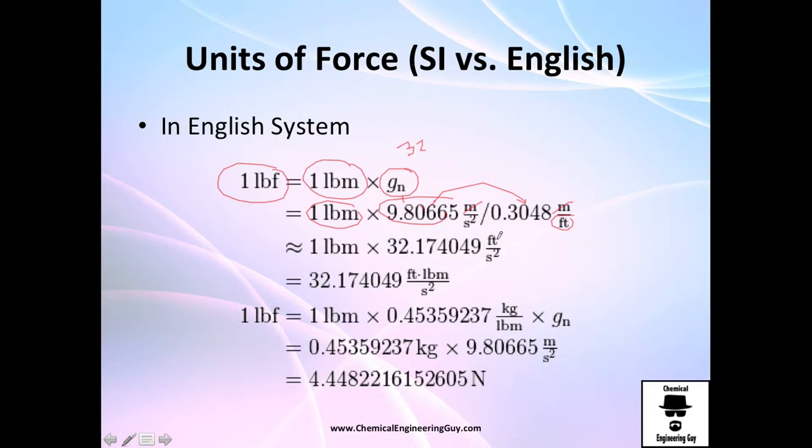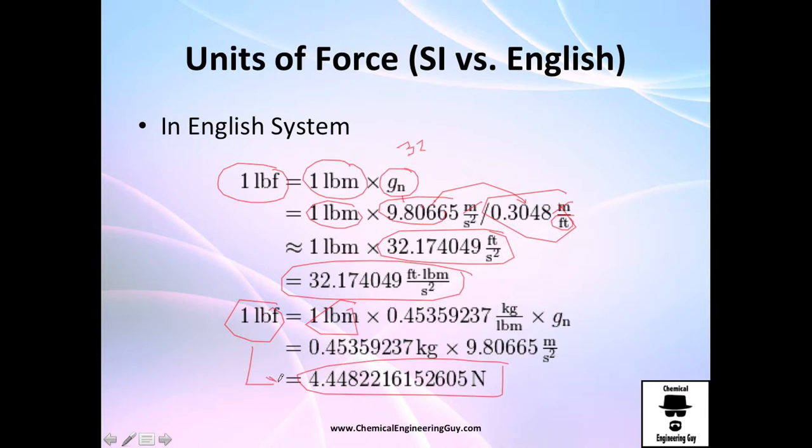This is the famous 32 I was talking about. One pound force is equal to 32.17. If you wanted to show it in international units, if you use this factor you will find out that one pound force is about 4.4 newtons. I would not recommend you to learn this by heart.